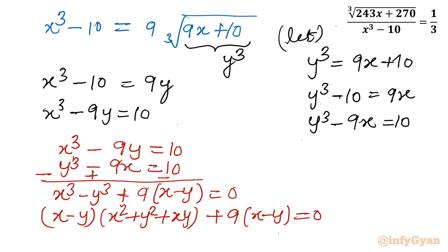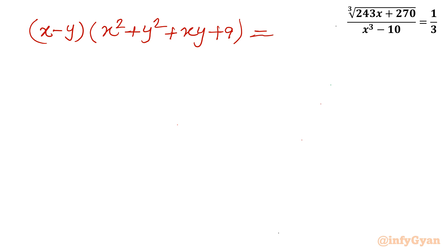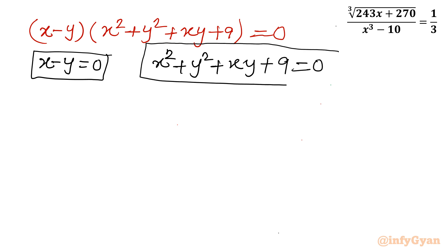Now (x - y) is common, so I take it completely outside. This gives us (x - y)(x² + y² + xy + 9) = 0. We have a product f · g = 0, which means either f = 0 or g = 0. So either x - y = 0, or x² + y² + xy + 9 = 0. We will solve these equations one by one.